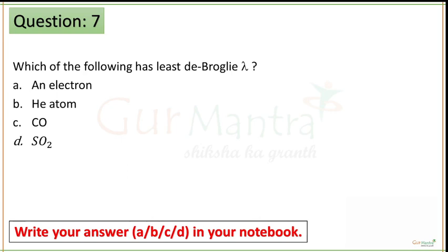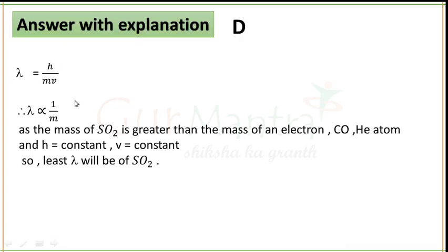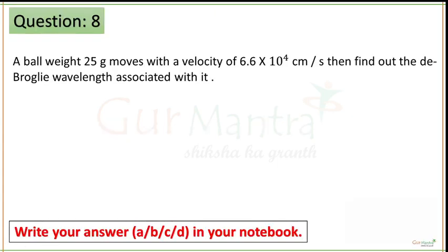Time up guys. You have to calculate the mass of all the given species. As you know, λ = h/mv, and since h and v are constant, wavelength is inversely proportional to mass. The element with greater mass will have the least wavelength. When you calculate the masses, SO₂ has the greatest mass, so the wavelength of SO₂ should be the least. The correct option is option D. Next question is question number 8 — your time starts now.